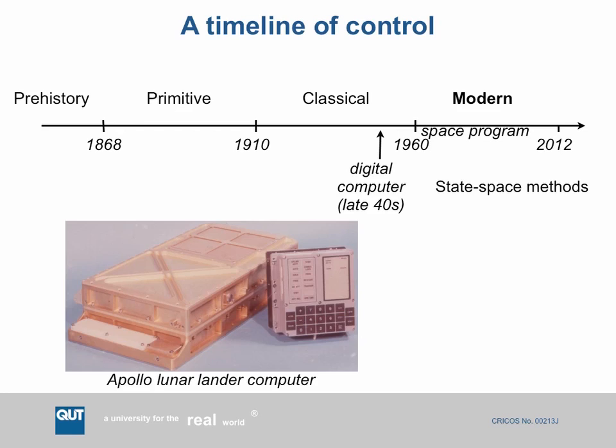The modern era starts in 1960 and is still going. A really seminal achievement of modern control is the Apollo Lunar Landing Computer — a relatively small, very primitive computer, but a computer nonetheless, which was able to land people on the moon numerous times. I think that's a very impressive example of early computer control technology.